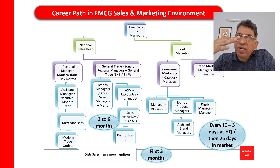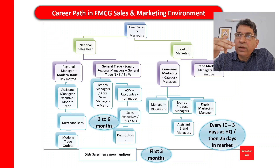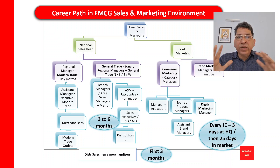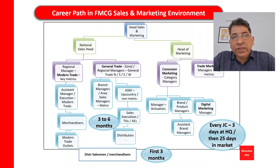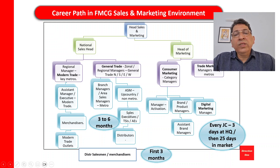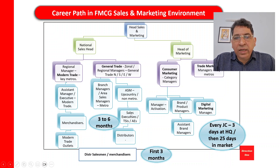Each zone is headed by a zonal manager, and within zones you have a state head or a branch manager. Mumbai city will generally be one area, Gujarat will be one area, and rest of Maharashtra will be another area, each headed by an area sales manager. Typically six or seven area managers report into a branch manager or zonal manager.